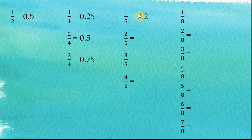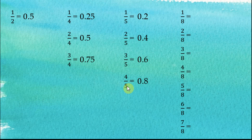1 over 5 is equal to 0.2. 2 over 5 is equal to 0.4. 3 over 5 is equal to 0.6, and 4 over 5 equals 0.8. This is easy.